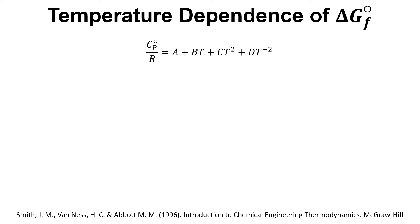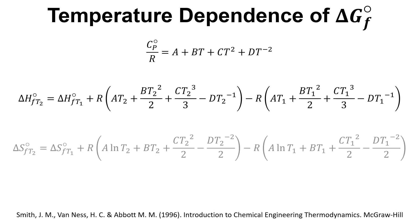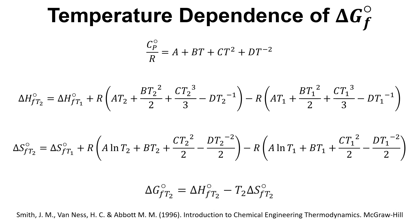Sticking to this form for Cp, we can now combine all of these equations. To find the Gibbs energy of formation at T2, we first need the entropy of formation at T2 and the enthalpy of formation at T2, along with the value of T2 itself. Plugging all of that into delta G equals delta H minus T times delta S gives us a value for the Gibbs energy of formation at the temperature of interest.